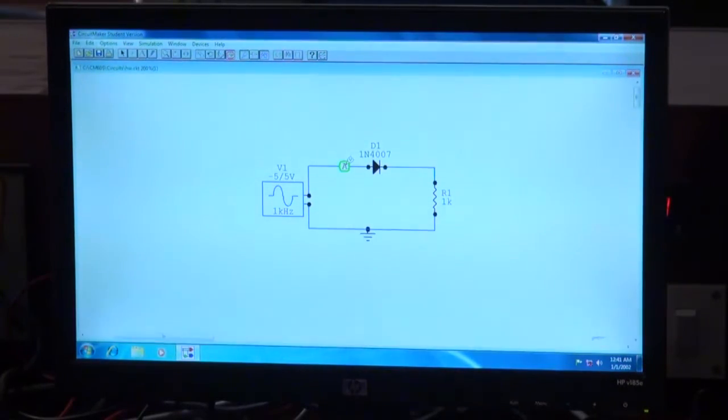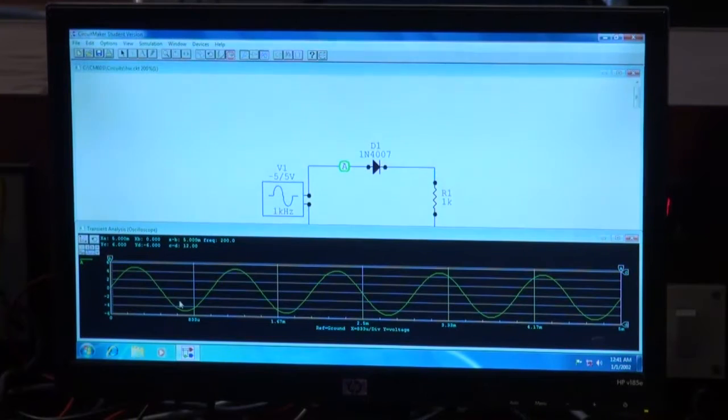I am just resizing it so that we can see the waveform clearly. Now if I am using this probe here, I will get a sine wave signal. You can see there is a green signal. This shows the signal that is available at this point.